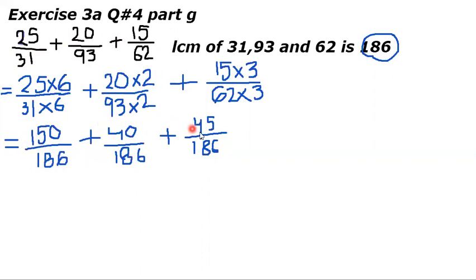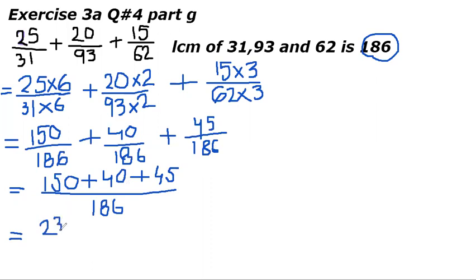We have changed these fractions into equivalent fractions with the denominator equals to 186. Now the denominator is same it means that they are like fractions. Now we can add their numerators. We add 150 plus 40 plus 45 and in the denominator 186 we will write it only one time because it is same. Now when we will add 150, 40 and 45 it will give us 235 upon 186.